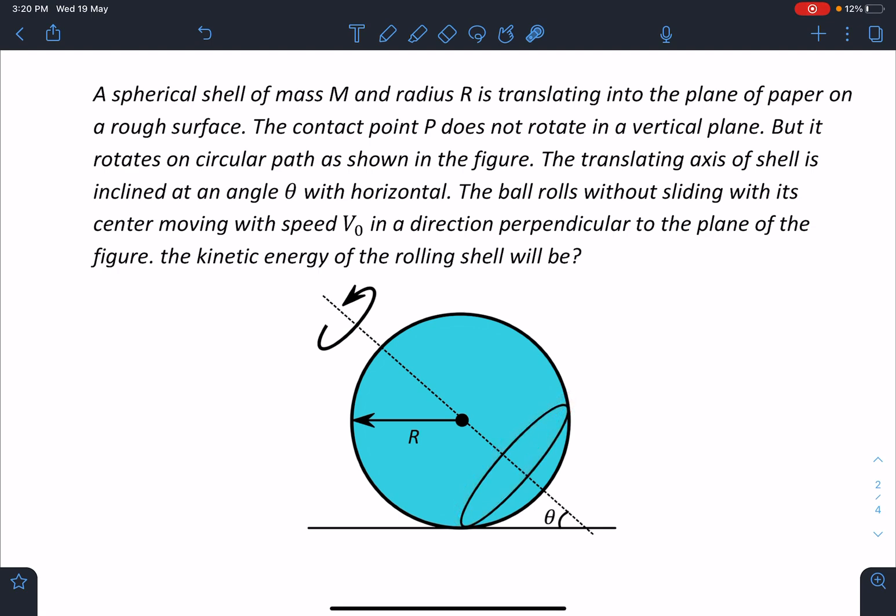The translating axis of the shell is inclined at an angle theta with the horizontal. The ball rolls without slipping with its center moving with speed v₀ in a direction perpendicular to the plane of the paper. The question asks: what is the kinetic energy of the rolling shell?